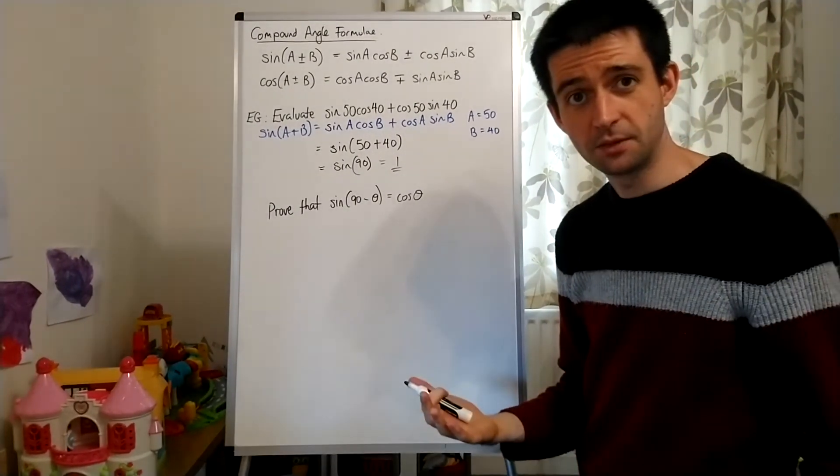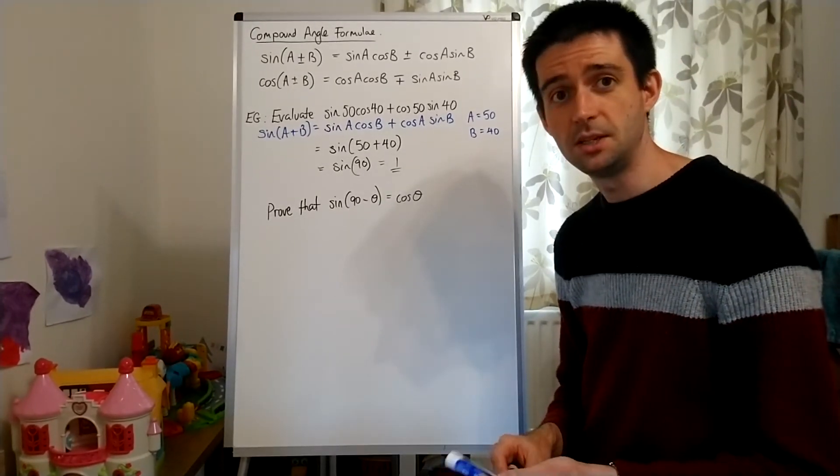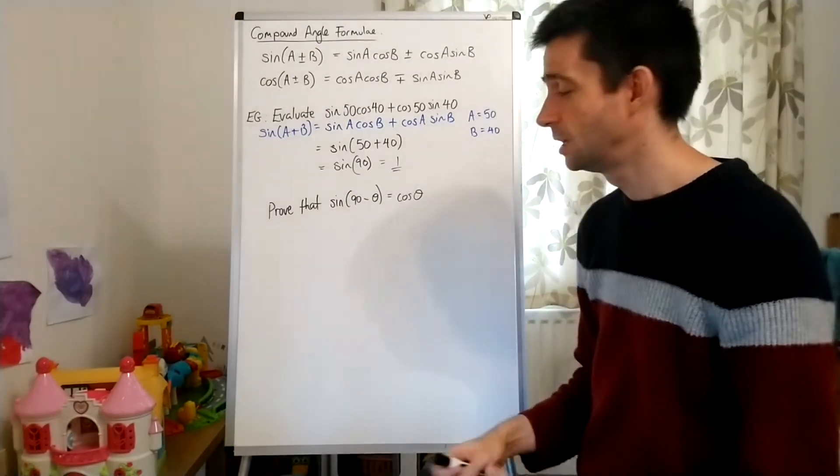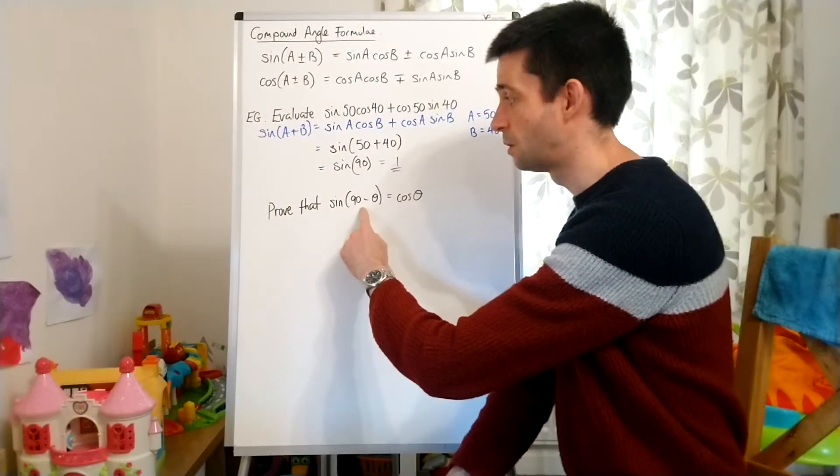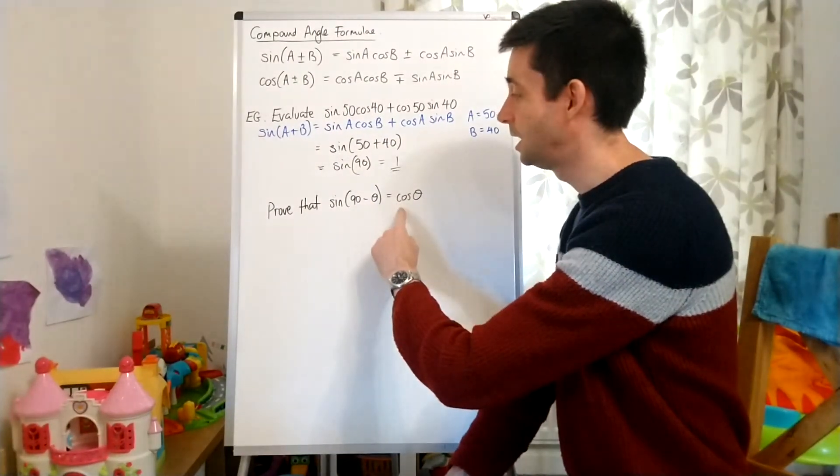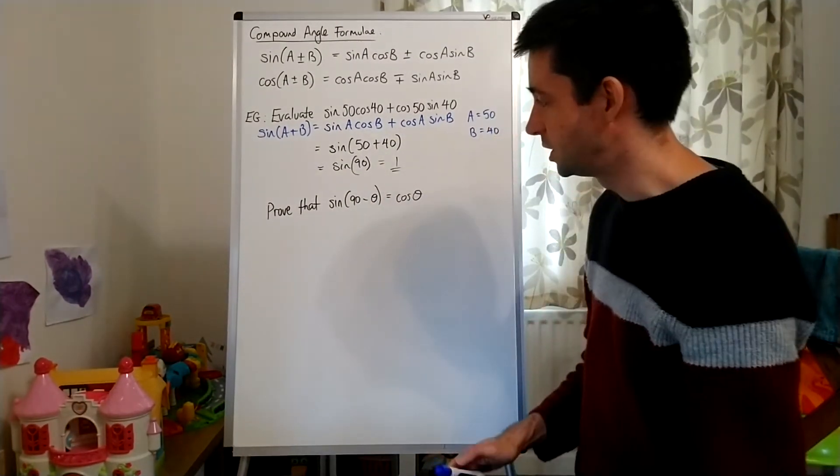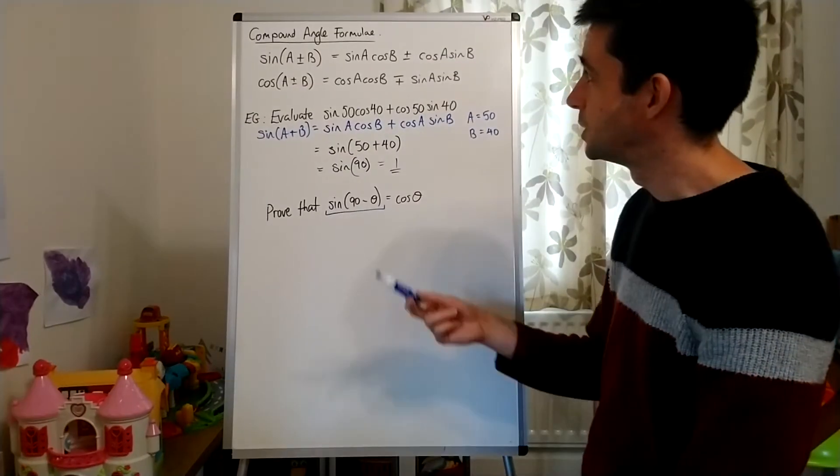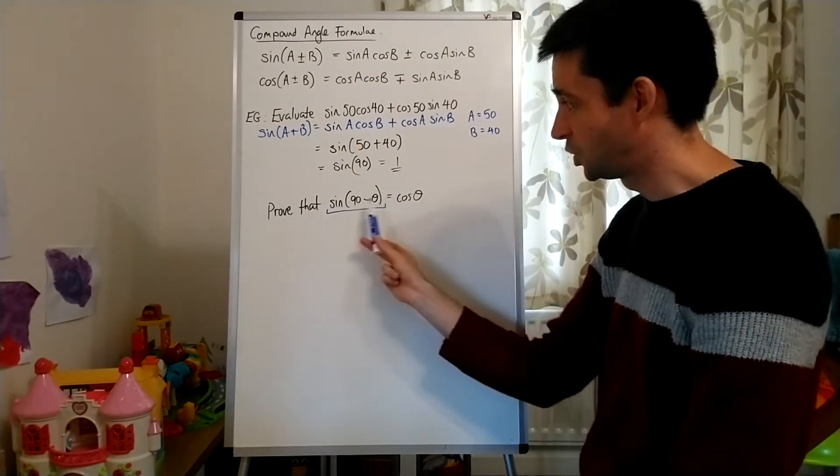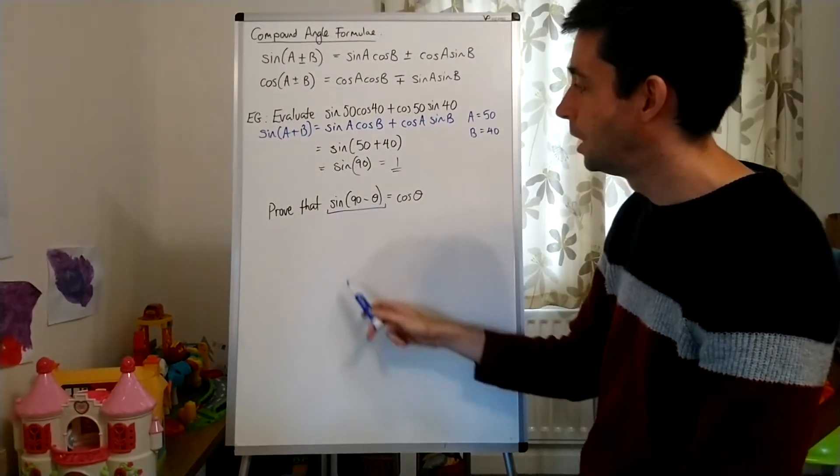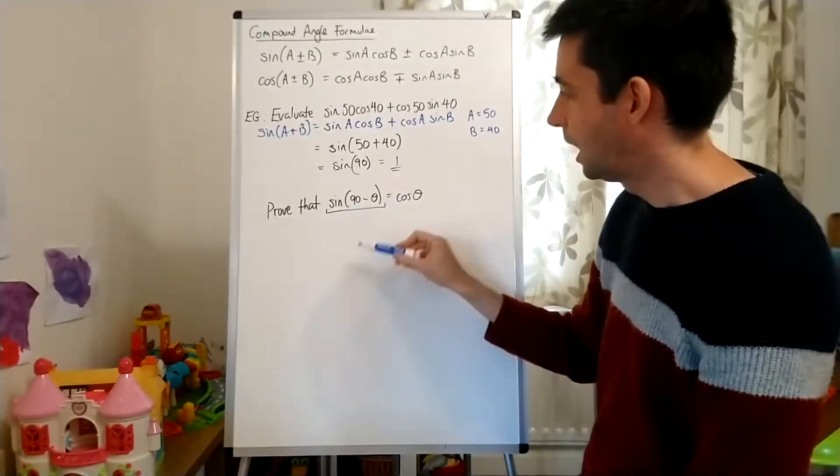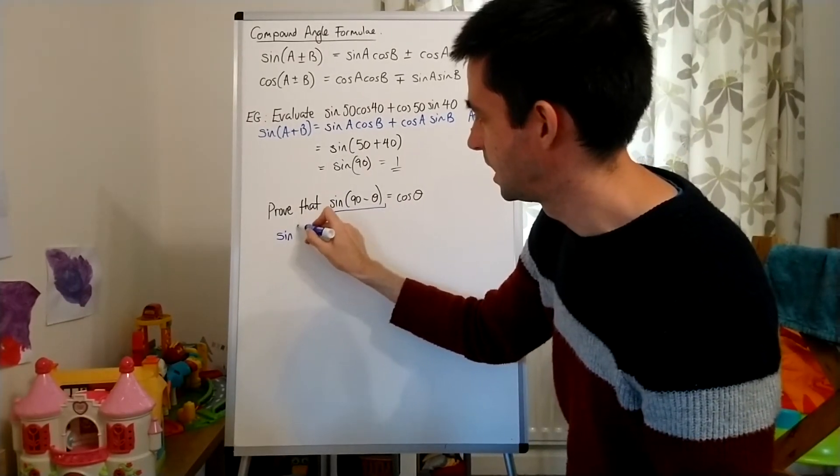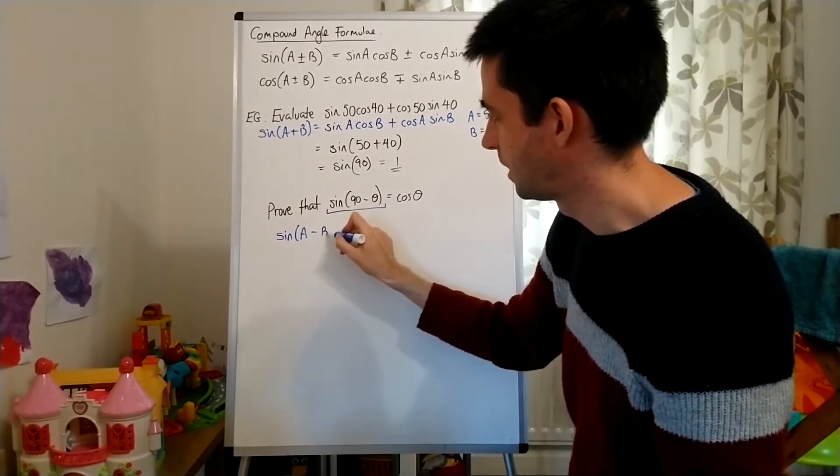OK, the other thing that we have to do is we have to use these compound angle identities to prove relationships between different trig functions. What I have here is to prove that sine of 90 minus theta is the same as cos theta. So what I would do is I would look at the bit that's got the two terms in a bracket, and I would say which of the identities that I've got up here matches what I've got here. Well, I've got sine, so it's got to be this one, and then in the bracket, I've got a difference. So it's not going to be sine of A plus B, it's going to be sine of A minus B.